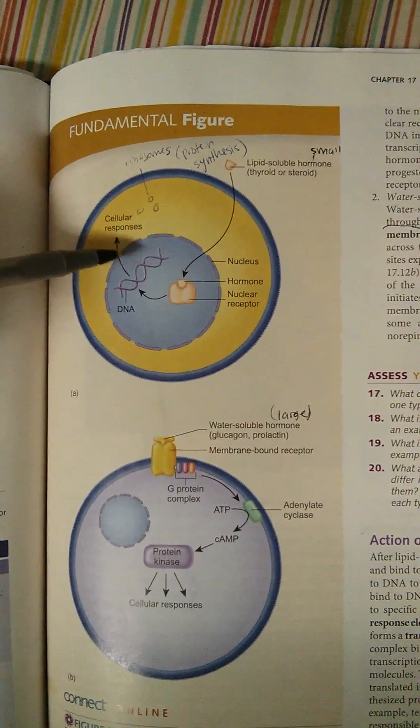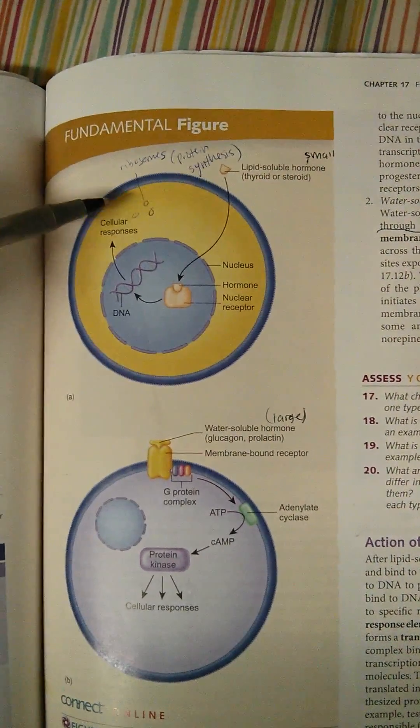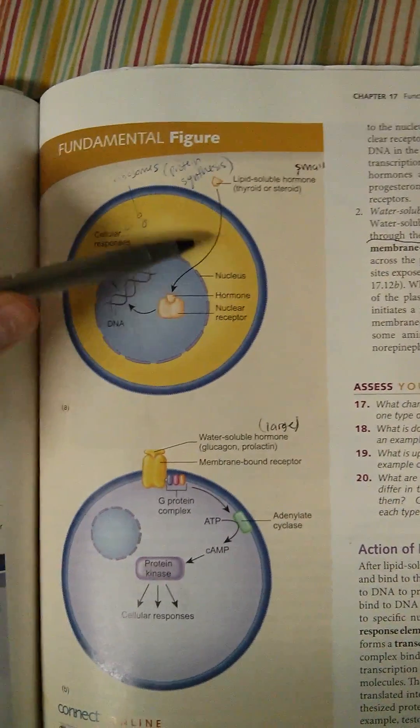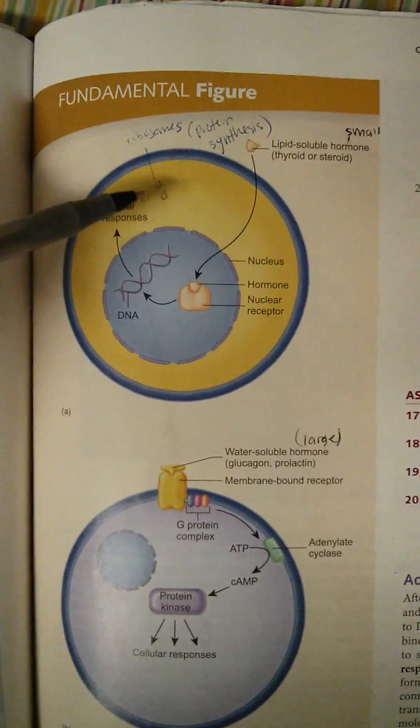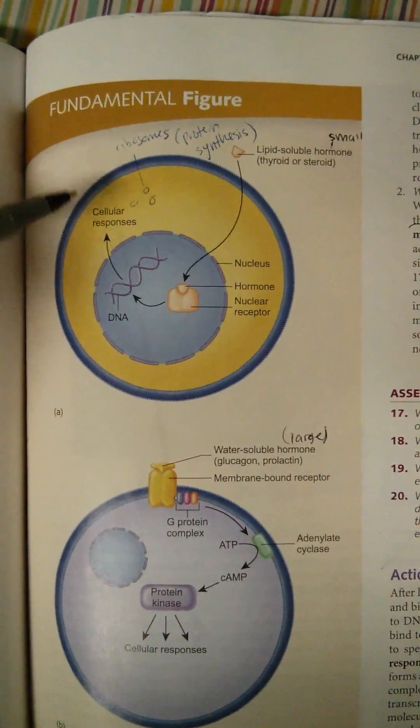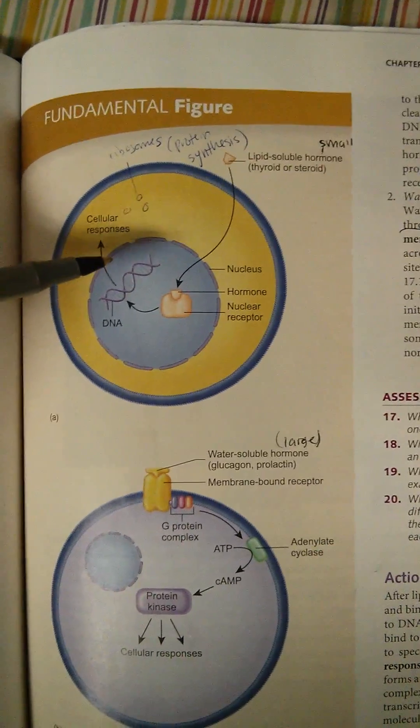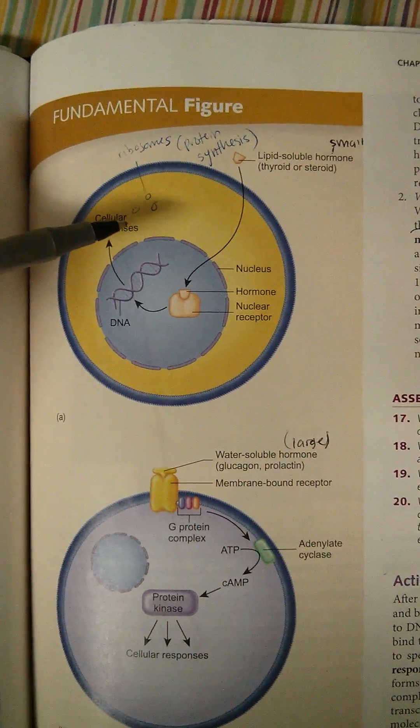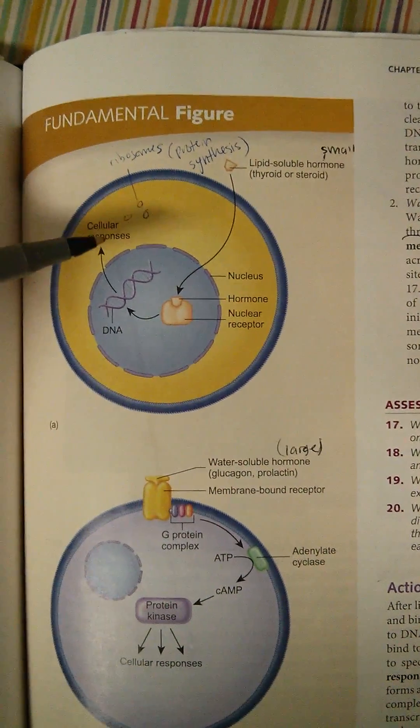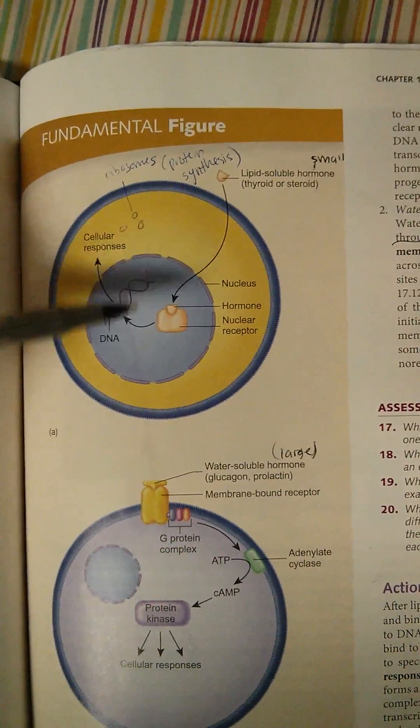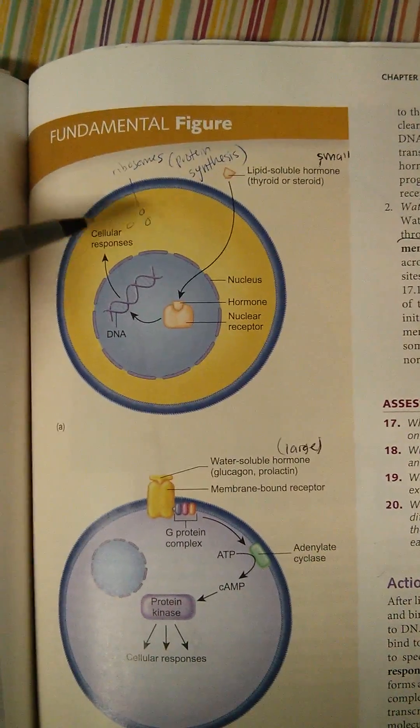So then it comes out and interacts with ribosomes, which are in the cytoplasm. They weren't in the picture, so I just kind of drew little circles to represent ribosomes. Because the ribosomes are important for synthesizing proteins or making proteins. So transcription eventually leads to the ribosomes.